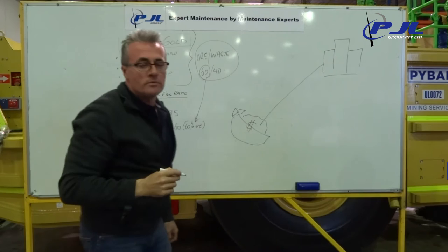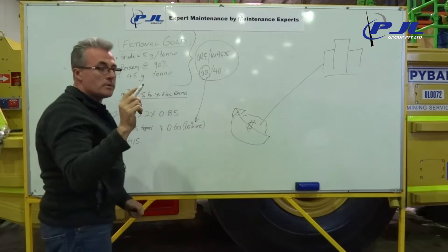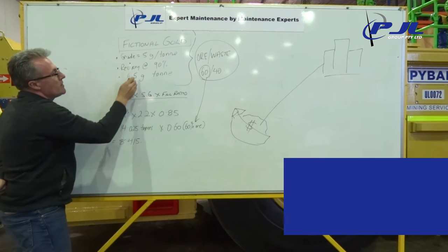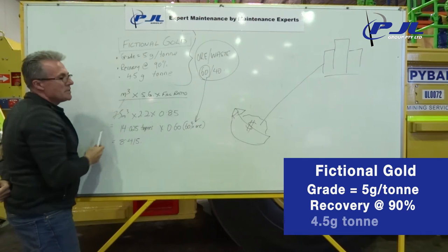So what does it mean? I've got a fictional gold company. We've just pulled these figures out because this is stuff that we know about. It doesn't represent any particular mine. So we've got a fictional gold company. The grade is five grams a tonne. We'll recover 90% of that through the mill. So we end up with four and a half grams a tonne.